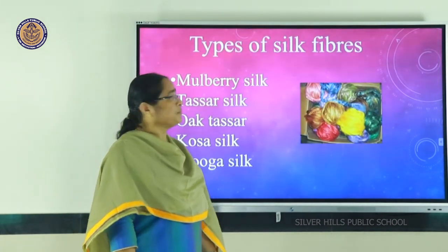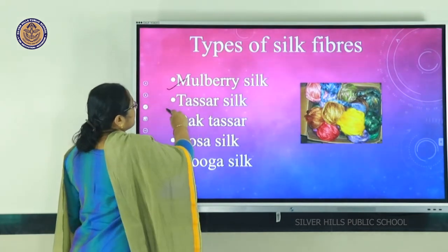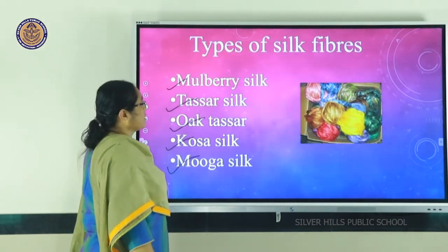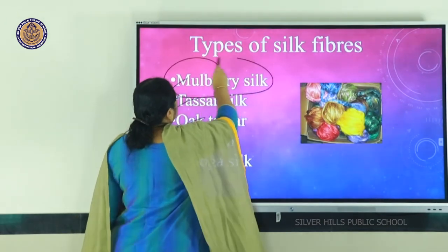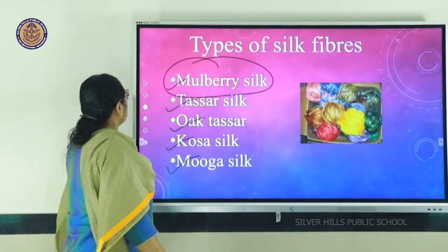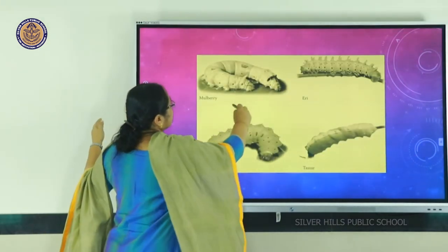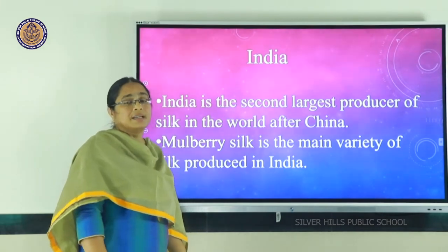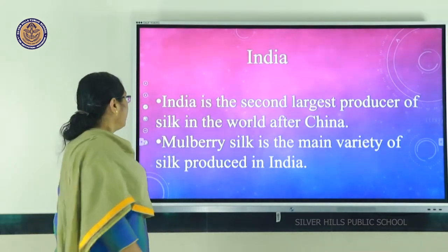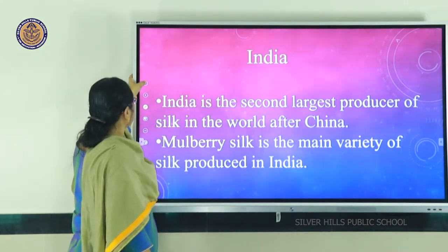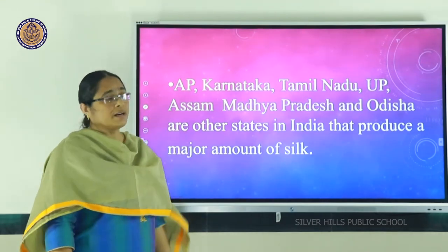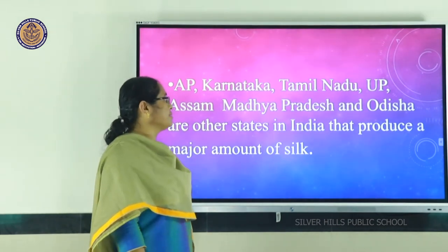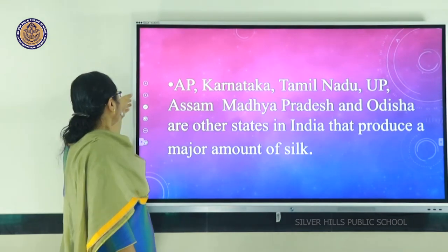Types of silk fibers include mulberry silk, tussar silk, oak silk, muga silk, and others. In India, mulberry silk — obtained from the silk moth Bombyx mori — is the main variety produced. In the world, India is the second largest producer of silk, with China in first place. In India, major silk-producing states include Andhra Pradesh, Karnataka, Tamil Nadu, Uttar Pradesh, Assam, Madhya Pradesh, and Odisha.